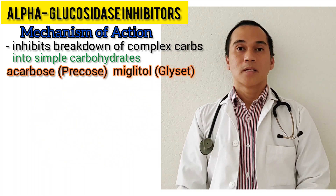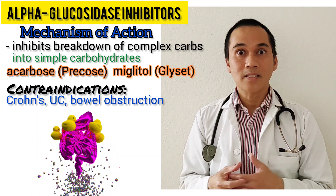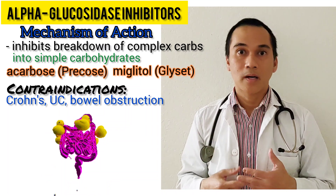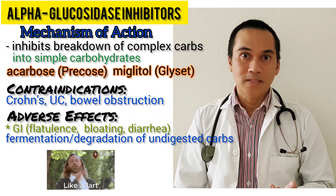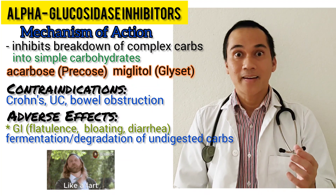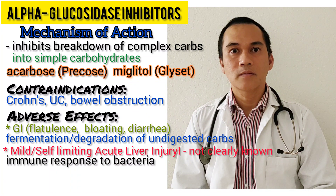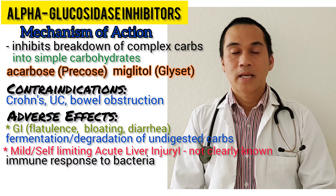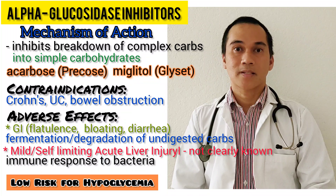These are acarbose and miglitol. Contraindications include inflammatory bowel disease, ulcerative colitis, and bowel obstruction, because undigested carbs will stay in the intestines. Adverse effects are mainly gastrointestinal — flatulence, bloating, and diarrhea — as undigested carbs are fermented in the intestines, producing gas. There is also a mild self-limiting liver injury, thought to be caused by bacteria produced by undigested carbohydrates. Because this medication does not involve insulin stimulation, there is a low risk of hypoglycemia.